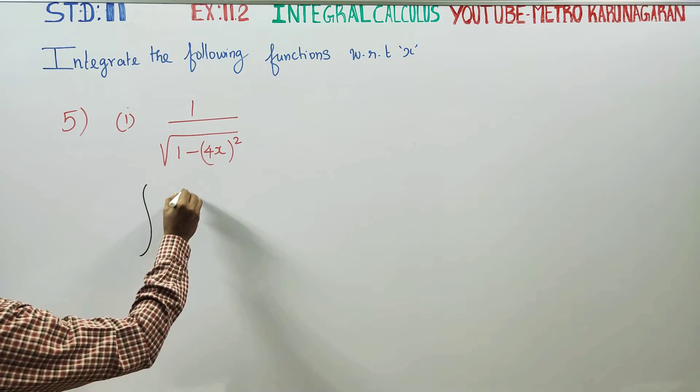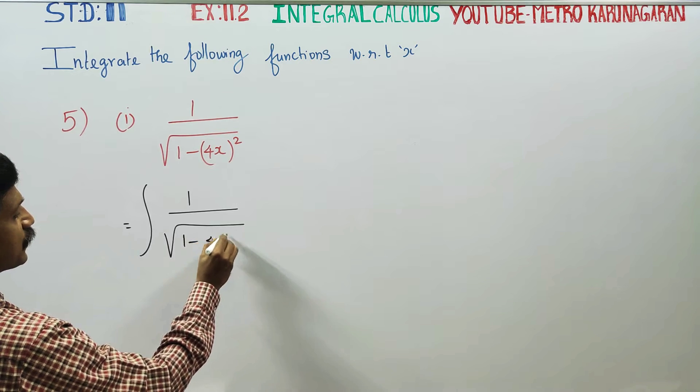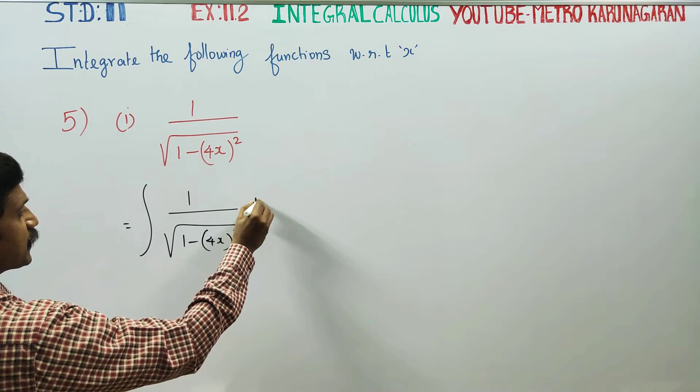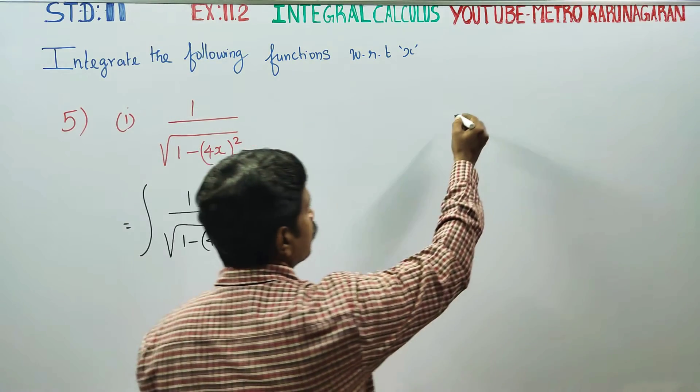Integration of 1 by square root of 1 minus 4x whole square with respect to x. You have to differentiate this. Actually, we have a readymade formula.